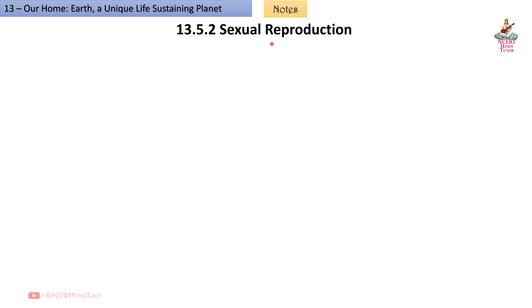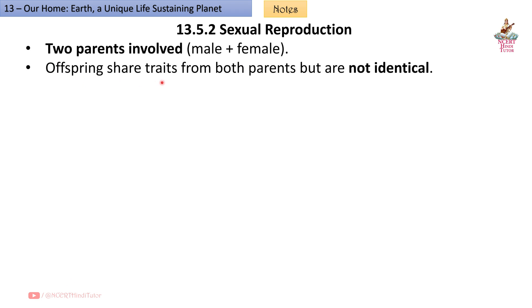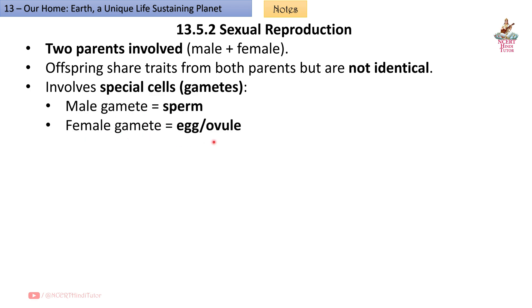13.5.2 Sexual reproduction: Two parents involved (male plus female). Offspring share traits from both parents but are not identical. Involves special cells (gametes). Male gamete equals sperm. Female gamete equals egg/ovule.